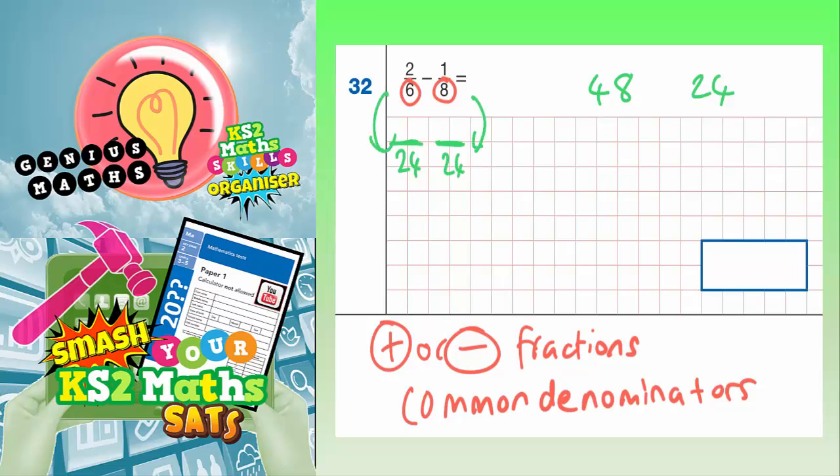But what we need to do is figure out what we've done to the 6 and 8 to get it into 24ths. So to get from 6 to 24, you multiply by 4. And to get from 8 to 24, you multiply by 3.